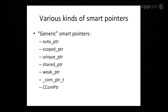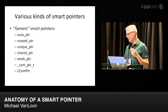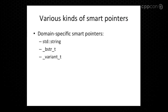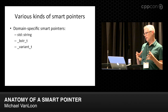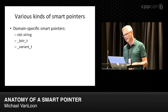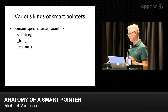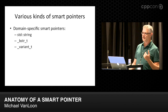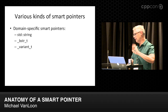Some examples: auto pointer, scope pointer, unique pointer, shared pointer, weak pointer, a couple of COM pointers. There are many others, of course. These are generic smart pointers that hold pointers of just about any type. There are also many domain-specific smart pointers. We're kind of abusing the term a little bit — they're really smart containers. String is one: it contains your string properly, deallocates it when nobody's using it, and has reasonable initialization defaults. Windows has BSTR. VARIANT is a cool one because it's a variant type that knows how to properly contain and manage itself.